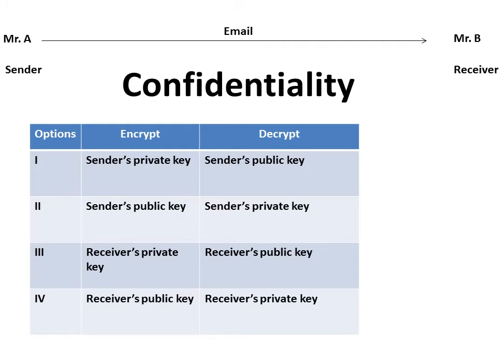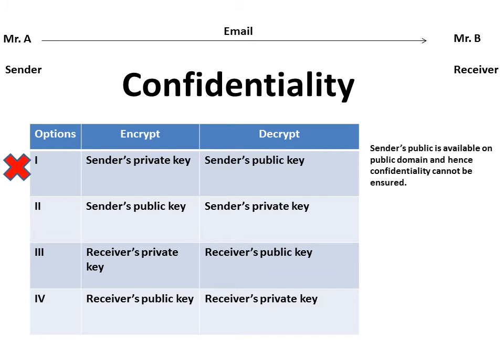Mr. A has four options: sender's private key, sender's public key, receiver's private key, or receiver's public key. He cannot use the sender's private key because the sender's public key, which can be used for decryption, is available in the public domain, and hence confidentiality cannot be ensured — anyone can decrypt the message.